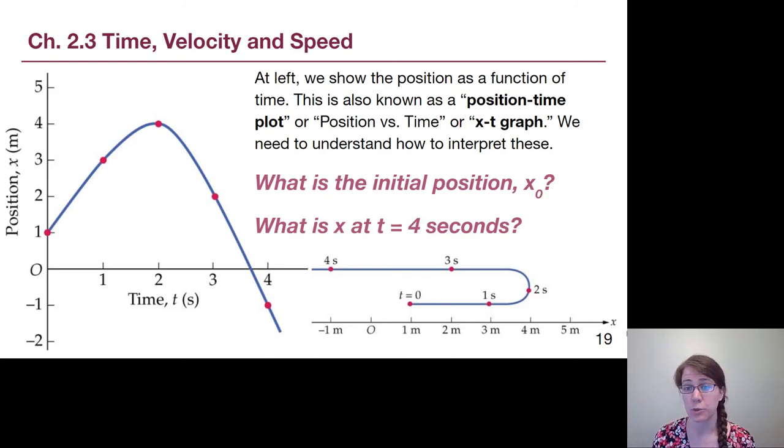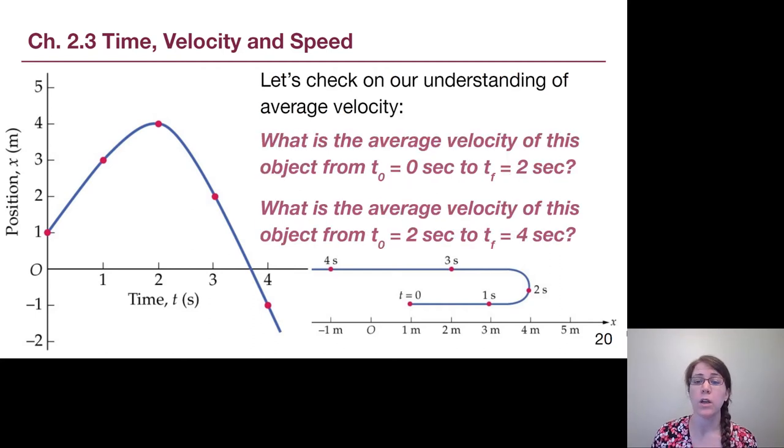The initial position for the entire situation would be where is the object at t equals 0 seconds. If we look at the different time points here, that would be a position of 1 meter, positive 1 meter. If we want to know x at any of the other points, we can just read off, once we get to that time, where the graph actually is, and so at 4 seconds, the position is negative 1 meters, and that negative matters. So I want you to check your understanding of average velocity by going through with the equation that we introduced a couple of slides ago, and calculate the average velocity of this object in the first two seconds, and the average velocity of this object in the last two seconds. Pause the video to give yourself as much time as you want.